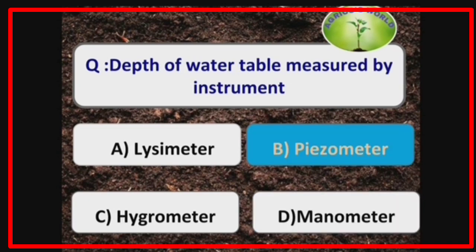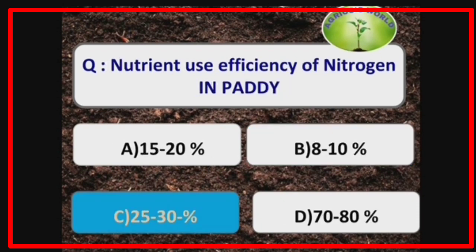The depth of the water table is measured by the instrument piezometer. The nutrient use efficiency of nitrogen in paddy is 25 to 30%.